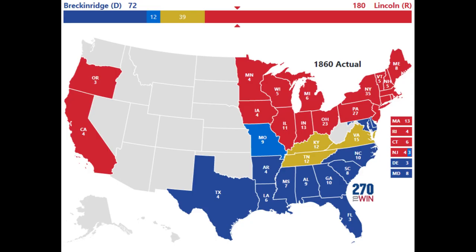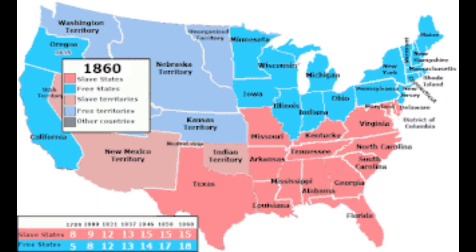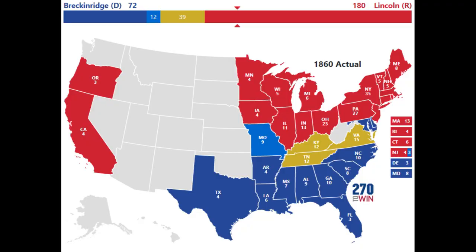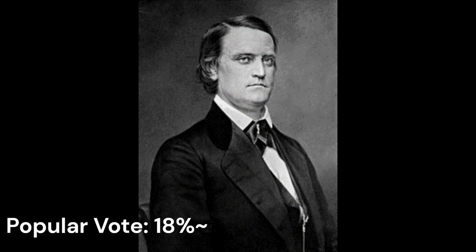Lincoln won the election with 180 electoral votes of the required 152, but with just under 40% of the popular vote. Every state which Lincoln won was a free state. Douglas came closest to Lincoln in the popular vote with just under 30%, but he garnered a mere 12 electoral votes with a victory in the border state of Missouri and picking up three electoral votes from New Jersey in a convoluted fusion system. The other four electoral votes for New Jersey went to Lincoln.